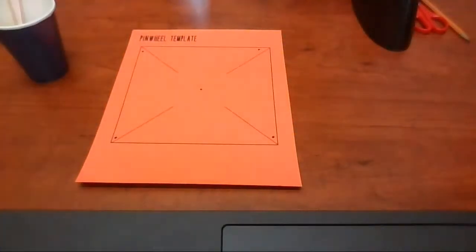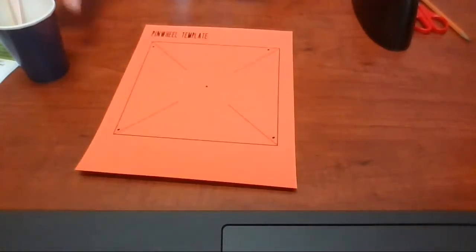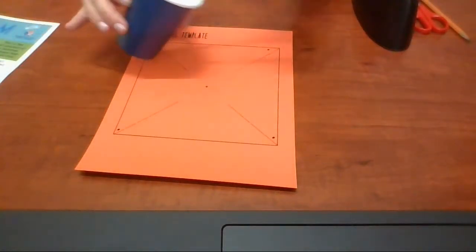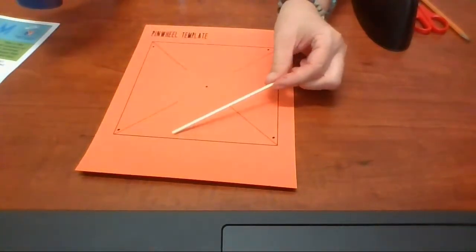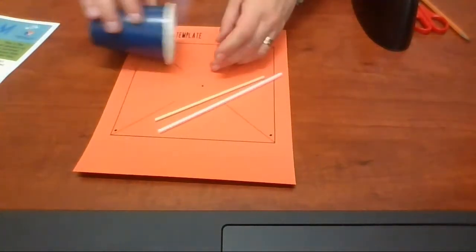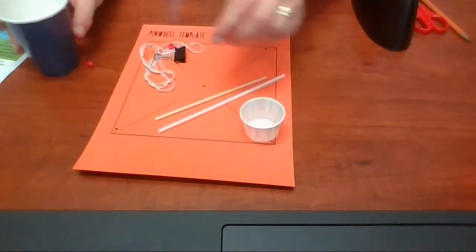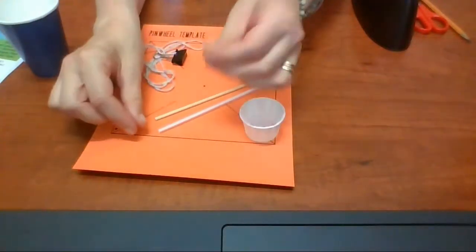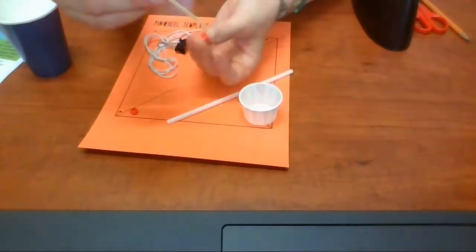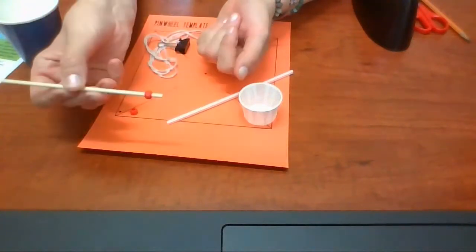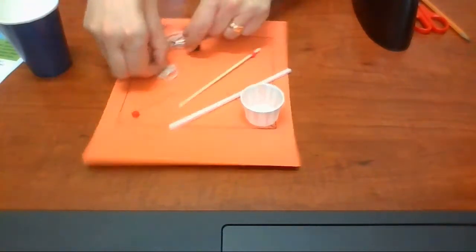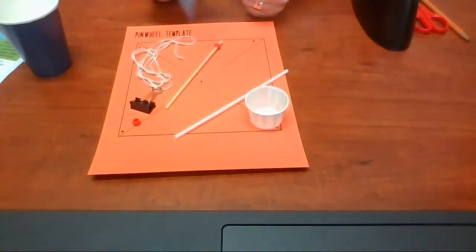You're also going to receive in the package a template for the pinwheel. You're going to get a little piece of doweling, straw, small cup, two pony beads—coincidentally these pony beads fit the doweling, they're the same size—length of string and a binder clip.